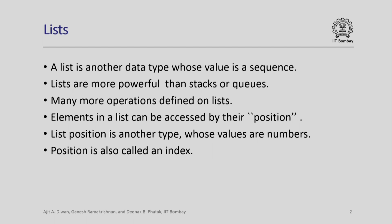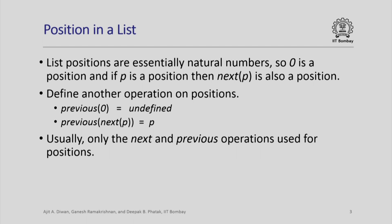Position is another type whose value you can think of as just a number, or sometimes we also call it an index in an array. List operations use positions in the list as parameters, and we will see that we can define many more operations on lists compared to stacks or queues.